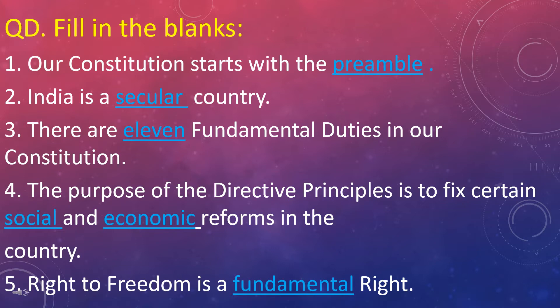So the answers are: number one — preamble; number two — secular; number three — 11 fundamental duties; number four — social and economic reforms; and number five — fundamental right.